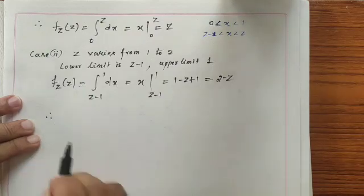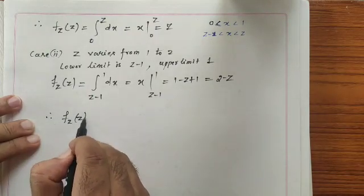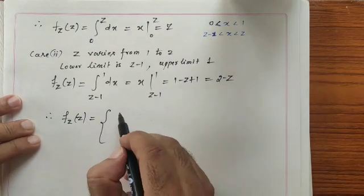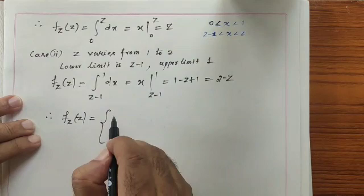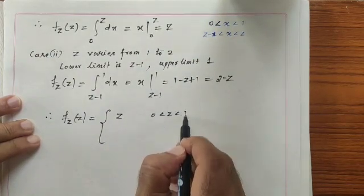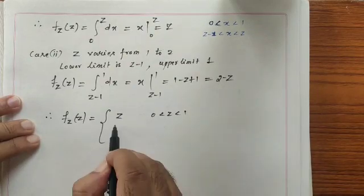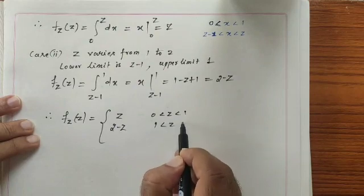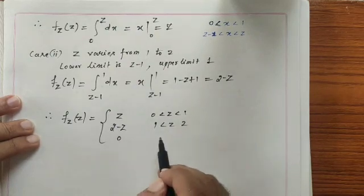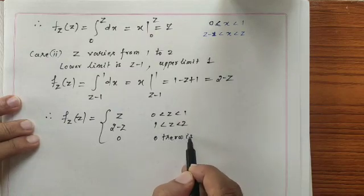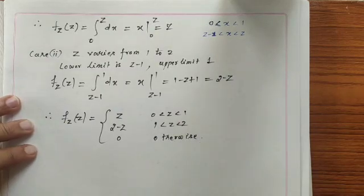Therefore, the probability density function of z is: f_z(z) = z whenever 0 ≤ z ≤ 1; f_z(z) = 2 − z whenever 1 ≤ z ≤ 2; and 0 otherwise. This completes the probability density function of z for the sum of two uniform random variables.